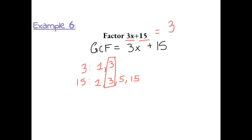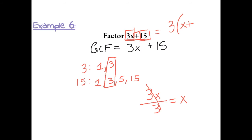So we need to divide out a 3 from 3x and 15. We put the greatest common factor, 3, on the outside. Then 3x divided by 3 — the 3s cancel out and we're left with x. Bring over your symbol, plus. Then 15 divided by 3 is 5. So 3x plus 15 factored equals 3 times the sum of x plus 5.